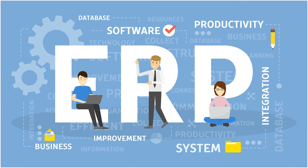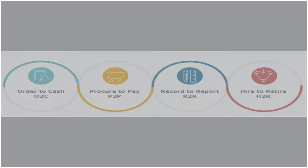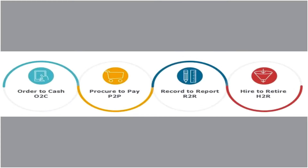ERP is a software which runs on internet technology. It has its own business processes and internal control system. These business processes are procure to pay, order to cash, and so on. There are various business processes.